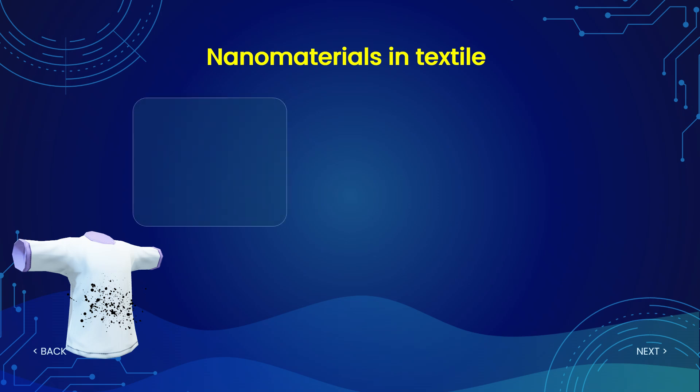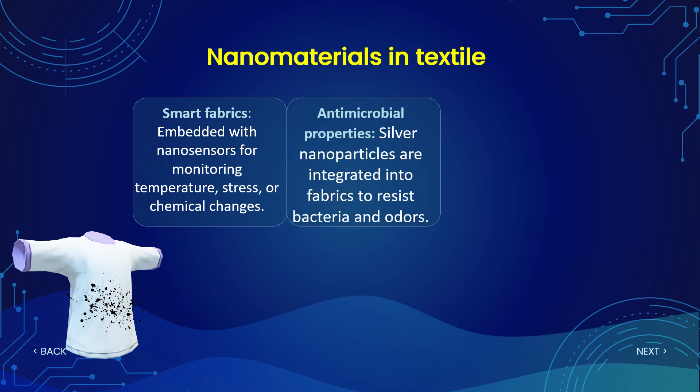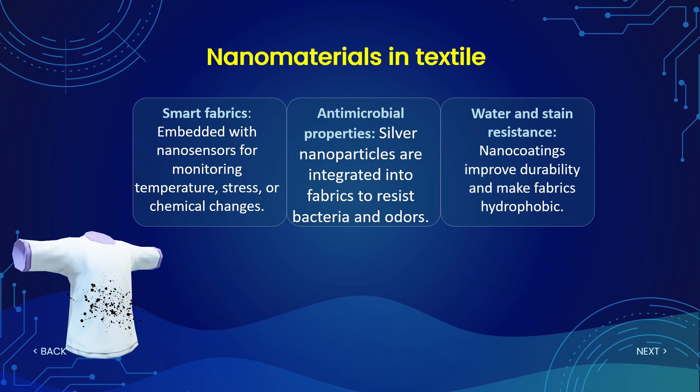Nanomaterials are also used in the textile industry. Smart fabrics that monitor body parameters like temperature, stress, and chemical changes can be fabricated with nanomaterials. Including nanomaterials in textile fabrication provides antimicrobial properties — for example, silver nanoparticles are integrated into fabrics to resist bacteria and odors. They also provide water and stain resistance, improving the durability and hydrophobic nature of the fabric.